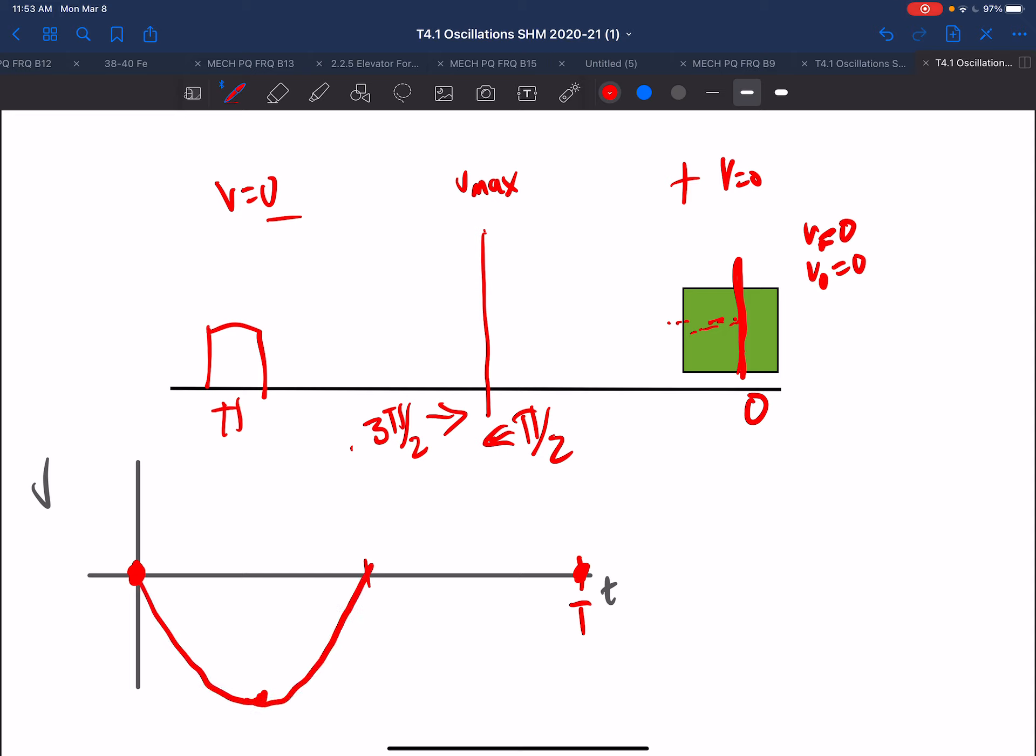And similarly, it ends up at 0 at π radians. And when we get on the way back at 3π over 2, it's at a positive maximum. And so that is our graph of the velocity versus time.